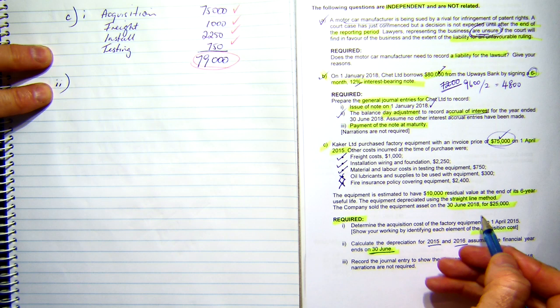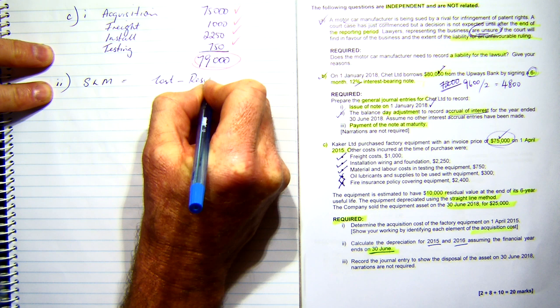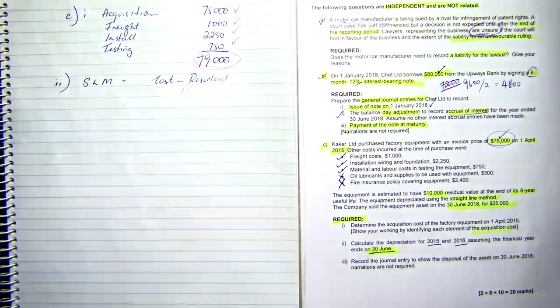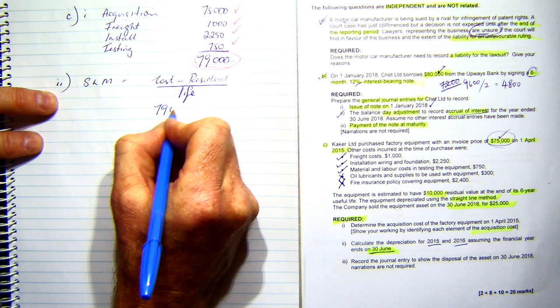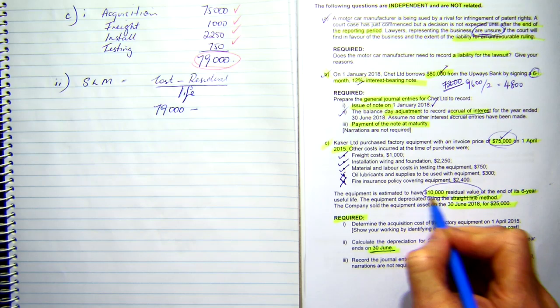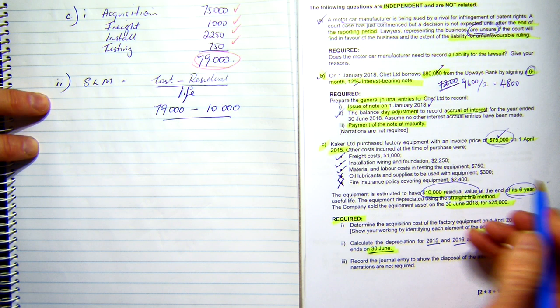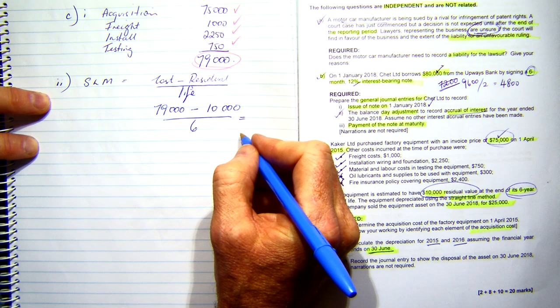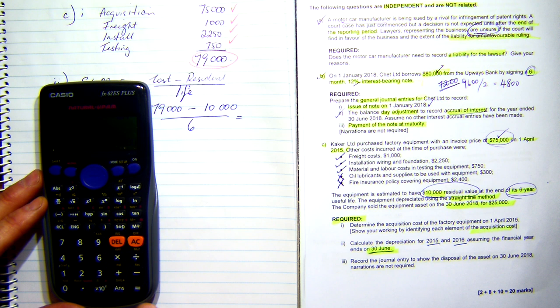This is where this number comes in, because this is my cost. And we're calculating depreciation using the straight line method. Straight line method equals my cost minus my residual divided by my life. Cost minus residual divided by life. Now, my cost, we know, is 79,000. Minus my residual value. It tells me my residual value is here at $10,000. And my useful life, it's six years. We've got it divided by six. And that equals 69,000 divided by six will give me... The brain's a bit soft this morning. I'll consult the calculator.